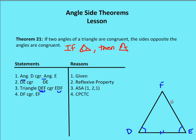Specifically, I have angle D, side DE, and angle E in the first triangle; and angle E, side ED, and angle D in the second. In that orientation, the two triangles are congruent by angle-side-angle. As a result, DF is congruent to EF by corresponding parts of congruent triangles are congruent.